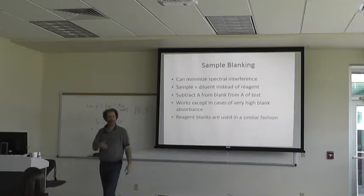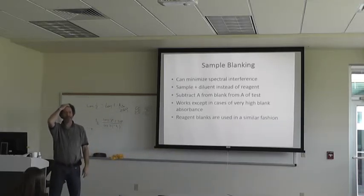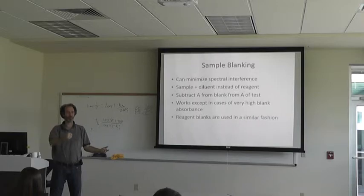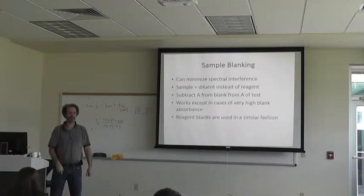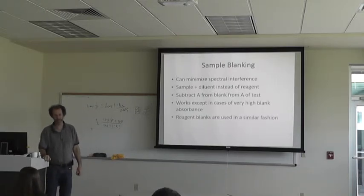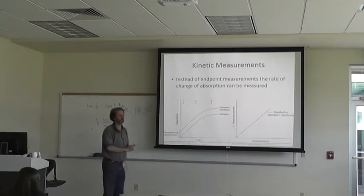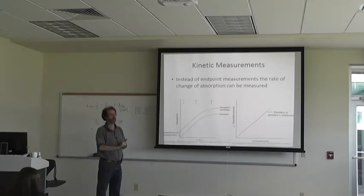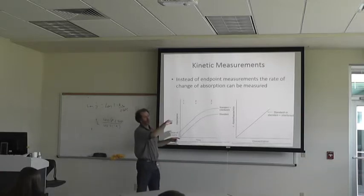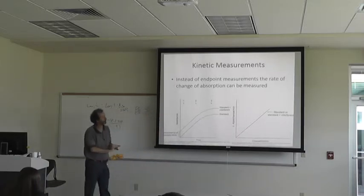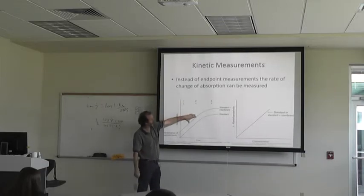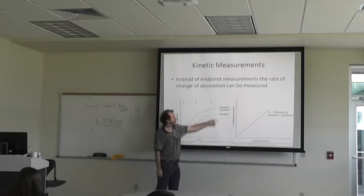Reagent blanks are used in a similar fashion — if you have reagents used in the assay that absorb light, you blank with just the reagents alone, because they contribute to absorbance too. You can get around some of these interferences via kinetic measurements, just like enzyme assays. You do several time points rather than endpoint measurements — the rate of change of absorption can be measured — and that will eliminate interference effects.